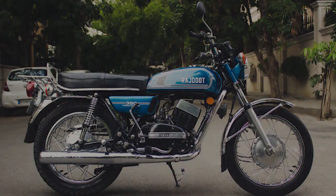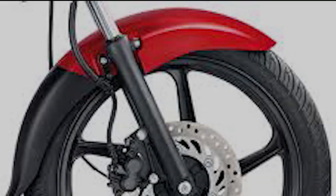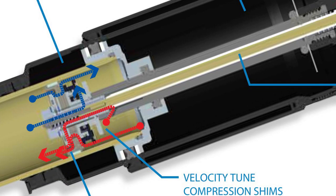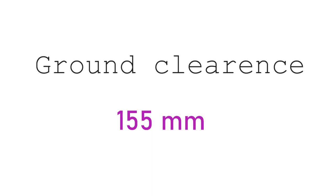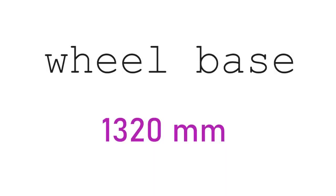On the front, we have a telescopic fork oil tank. On the rear, there is a swing arm coil spring with add-on suspension. The ground clearance is 155mm and the wheelbase is 1,320mm.